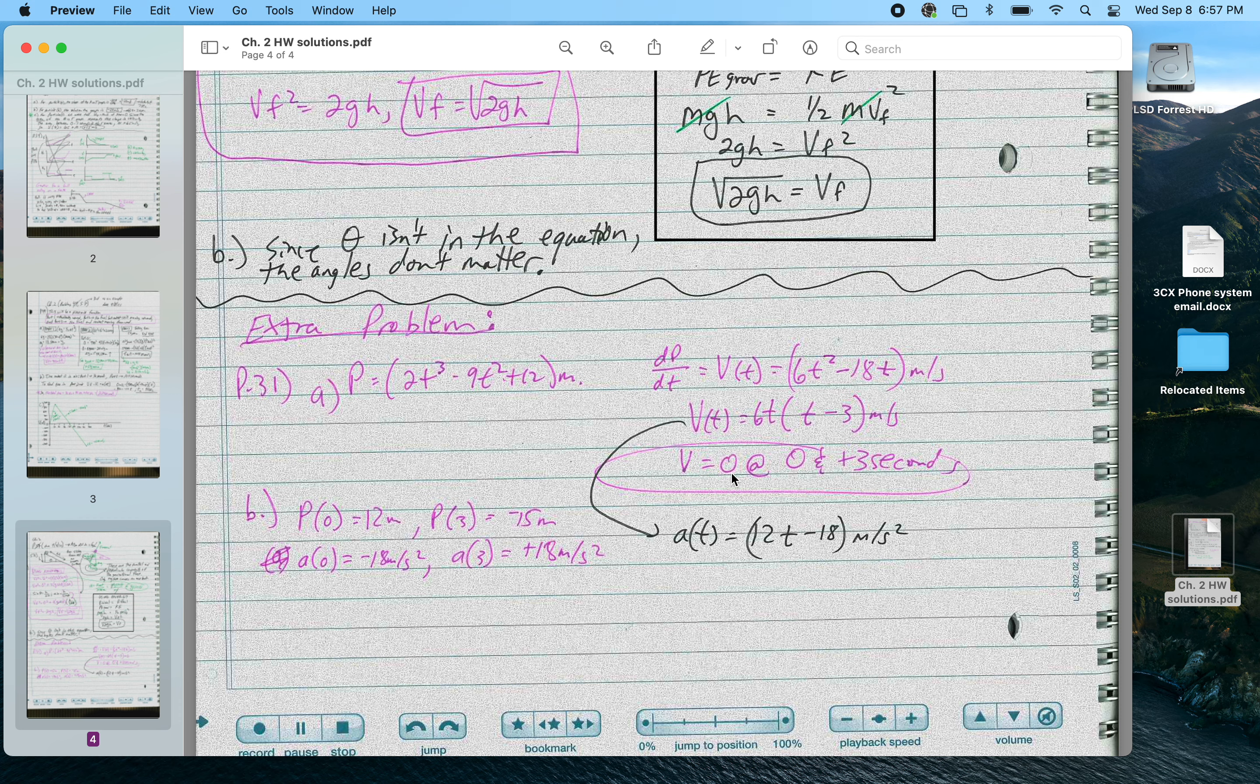That gets me 6t, which is the same thing as this if I factor out the 6t. So v is equal to 0 at 0 seconds and at plus 3 seconds.